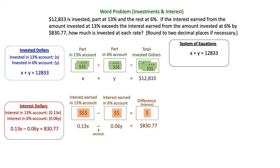We have an invested dollars equation. X plus Y equals $12,833 invested dollars. We also have an interest equation. The 13% account exceeds the 6% account by $830.77.